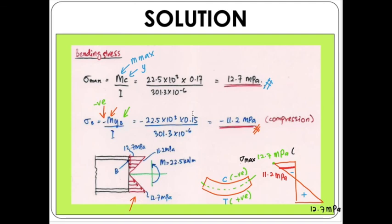So we have sigma maximum in compression and sigma maximum in tension for the full section. Similarly, for the positive bending stress at the bottom, there is also a corresponding value at the junction between the web and the bottom flange — a positive value of 11.2 MPa at the bottom part.